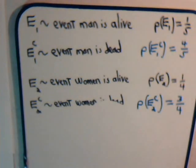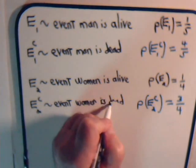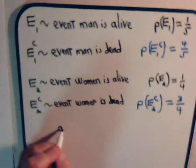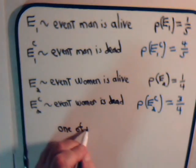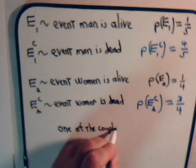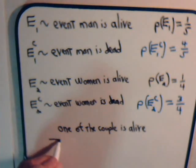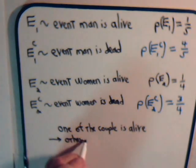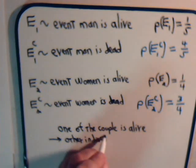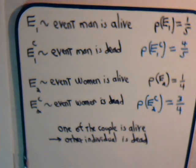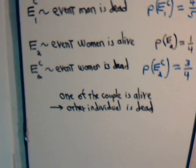Now we want to consider the situation where after 20 years one of the couple is alive, which means the other individual is deceased. If we think about this in more detail, there are two ways that event can happen.